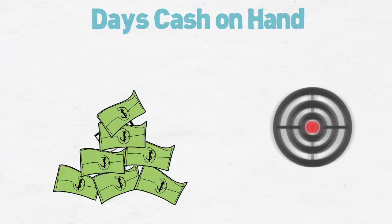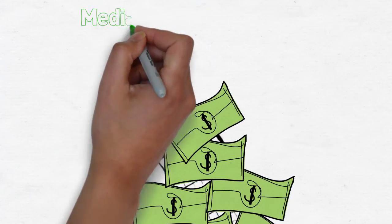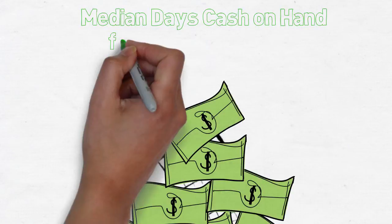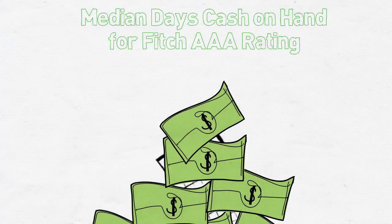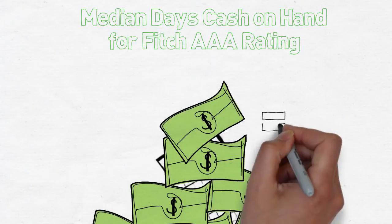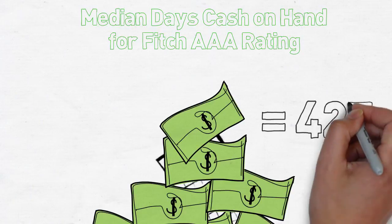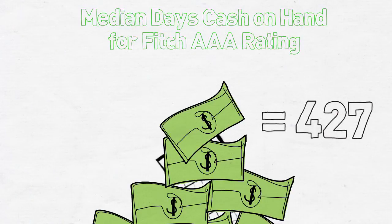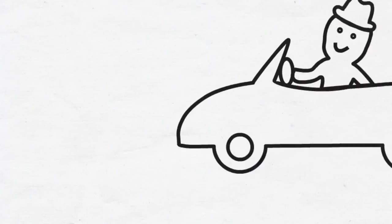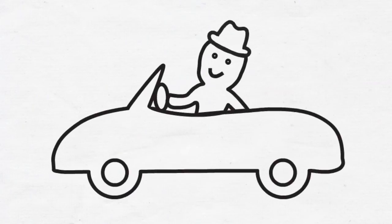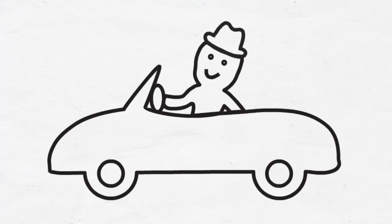In 2013, the median days of cash on hand for a AAA-rated water and sewer utility by Fitch Ratings was 427. So for half of those AAA-rated utilities, if they completely stopped making money, they could afford to operate and maintain their system for well over a year. Days of cash on hand for our man tells him how long he could afford to drive his car if he loses his job.